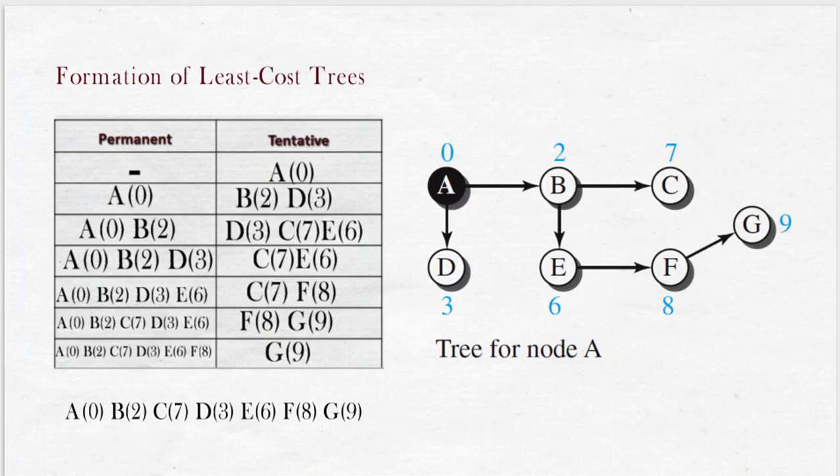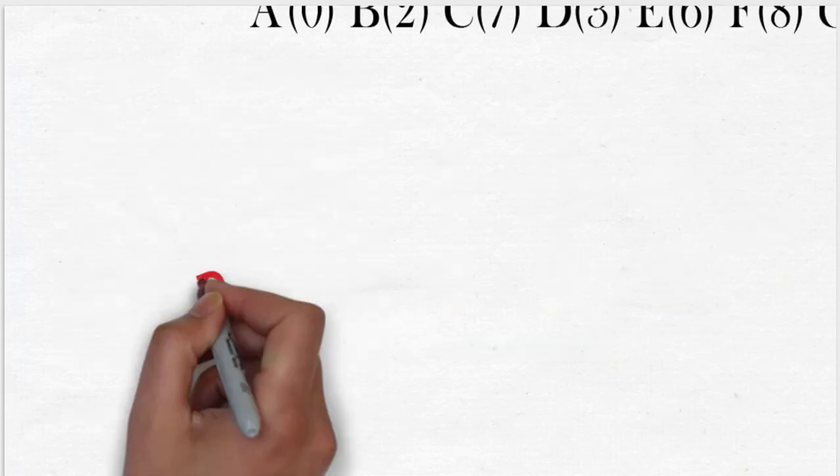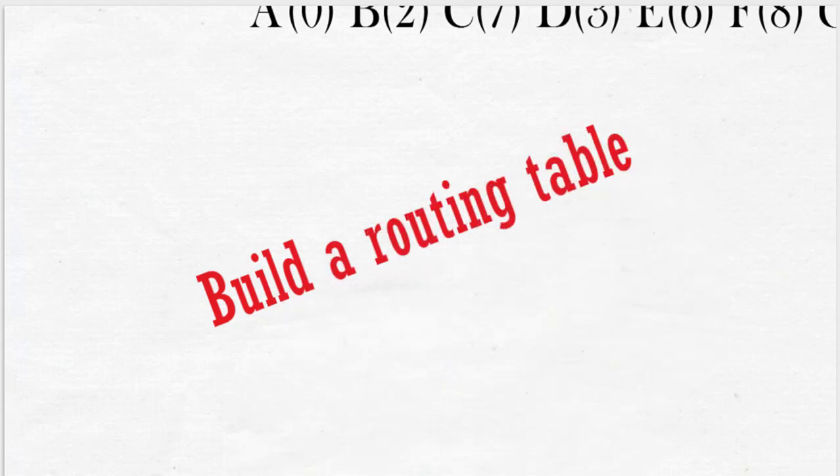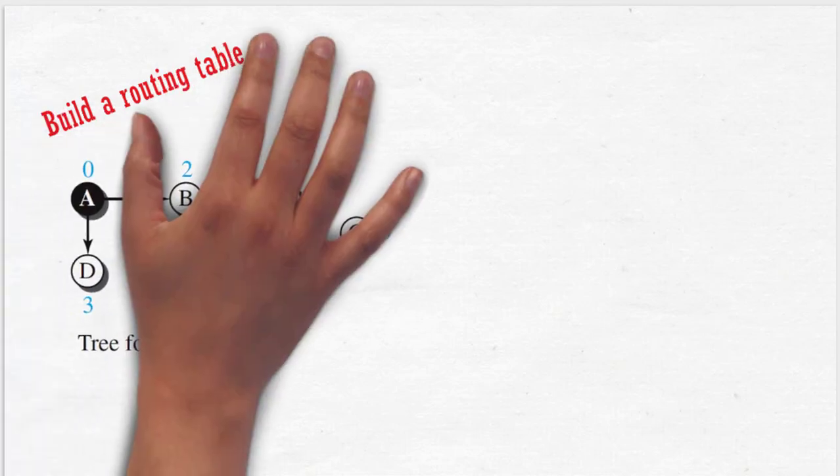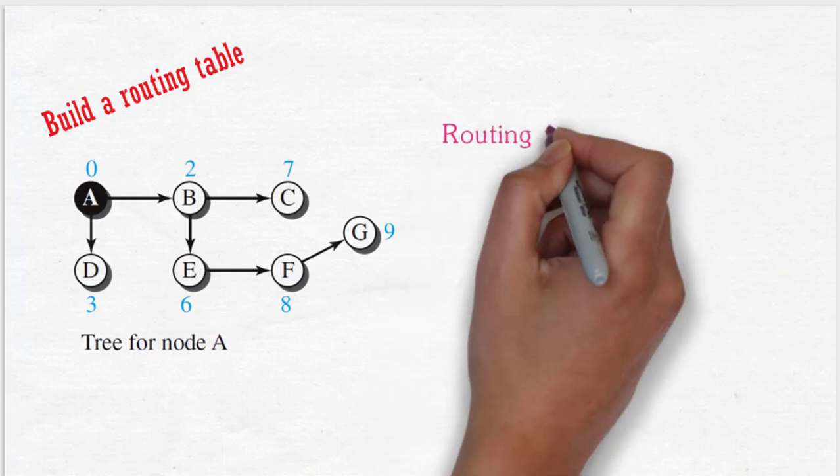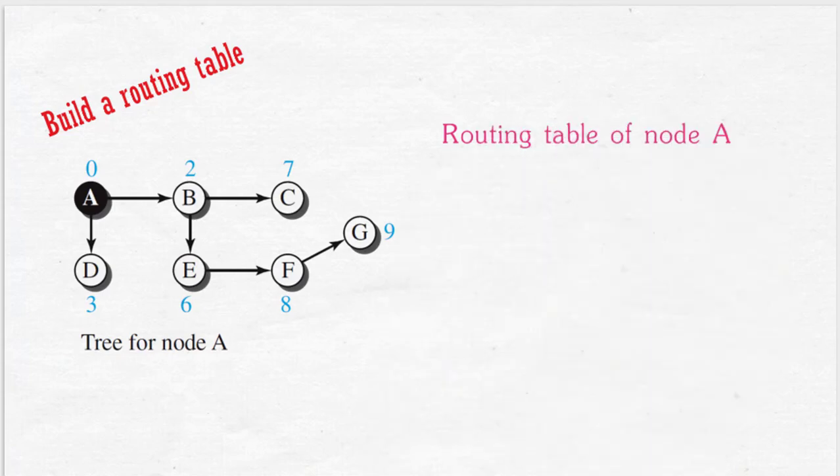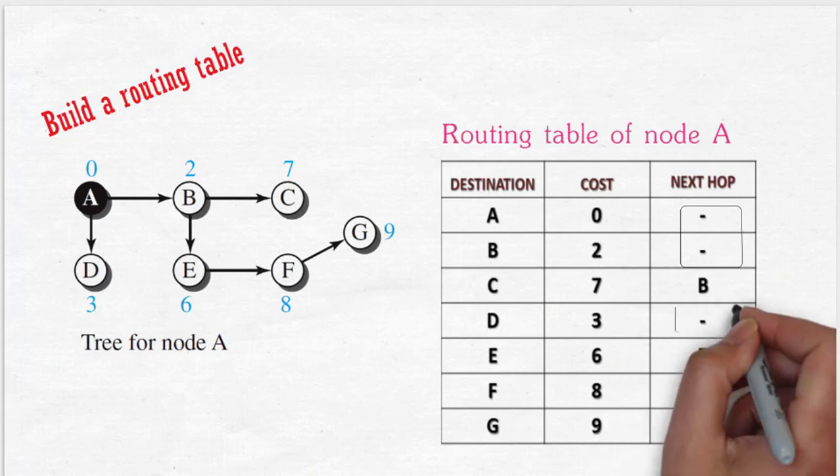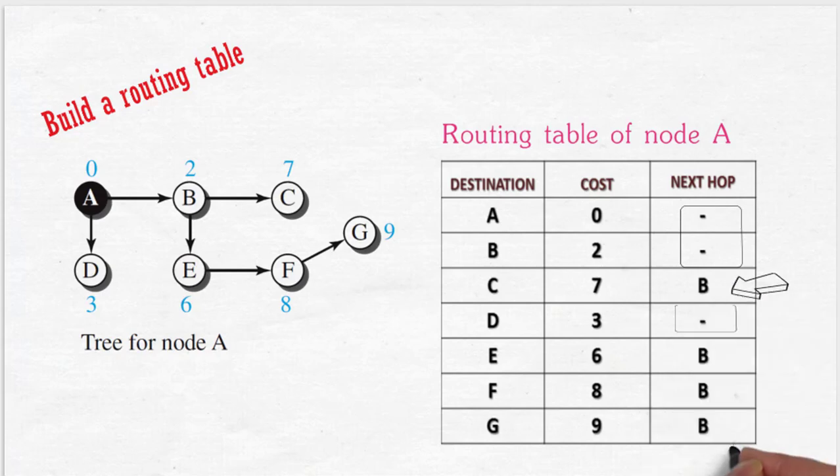Similarly, the tree can be drawn for all other nodes in the network system. A routing table is prepared from the estimated least cost tree from individual nodes to other nodes. We have considered node A here, and from the least cost tree of node A, the routing table of node A having the information such as destination, cost, and next router are built. In this routing table of node A, nodes B and D are adjacent, and the links to other nodes are actually through node B. That is, a packet is using next node B to travel from node A to other nodes in the network.